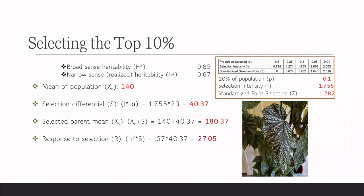The response to selection is going to be our narrow sense value times our selection differential, giving us 27.05.